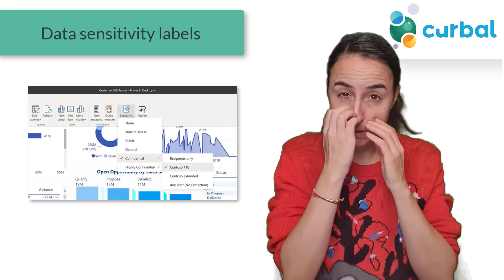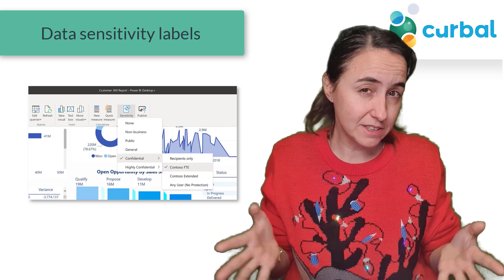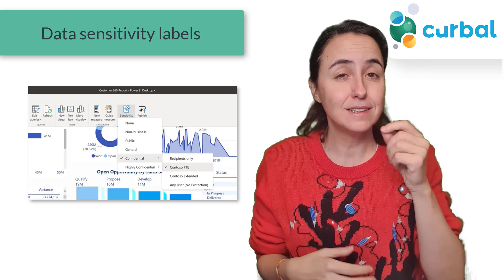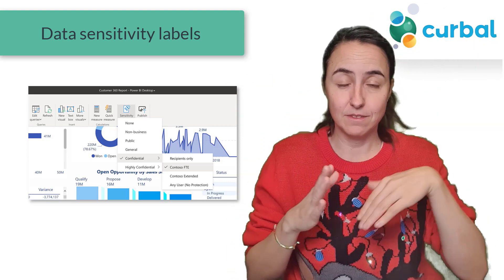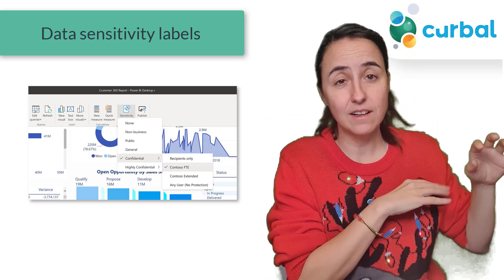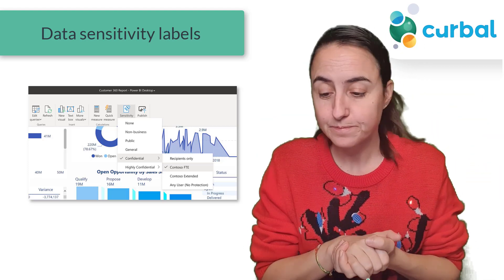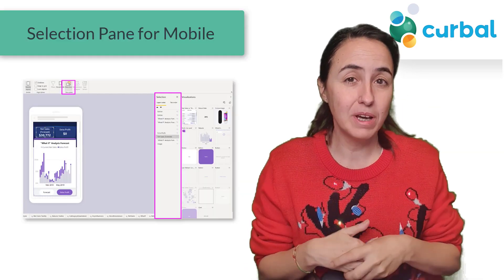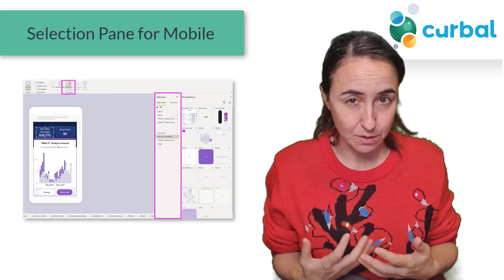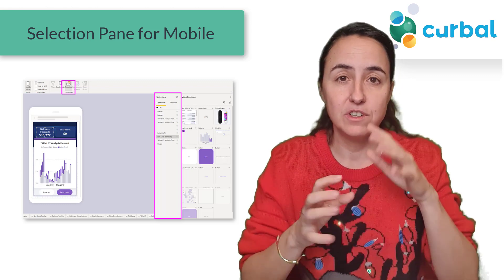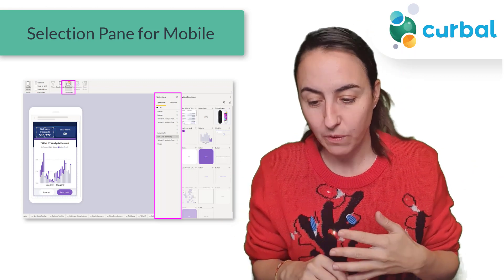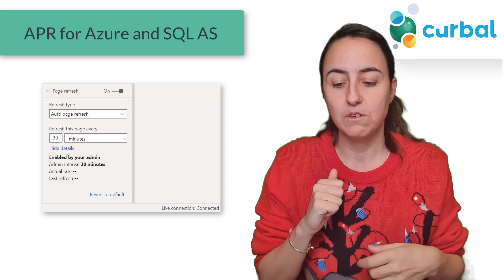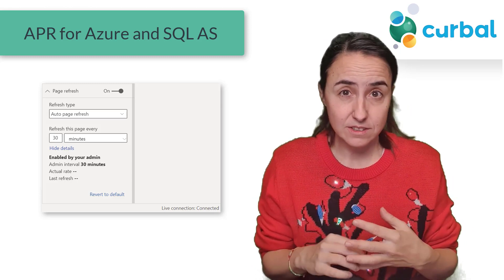Moving on to other updates: there is a data protection sensitivity label, which has been available in Excel for a long time and is now being added to Power BI. You can add sensitivity labels to the entire Power BI report, and they will be respected throughout the chain to Power BI service, when exporting to Excel, and so on. The selection pane is now available when creating mobile reports in Power BI Desktop, which is great for managing layering. And Automatic Page Refresh is now available for Azure Analysis Services and SQL Analysis Services.